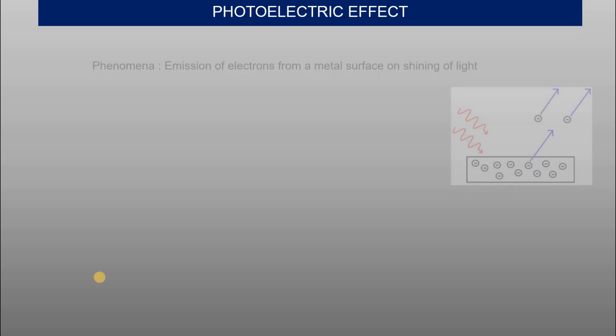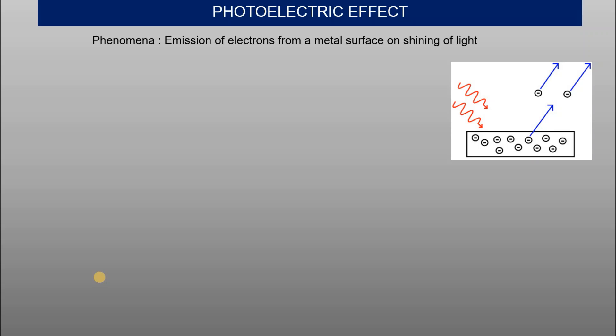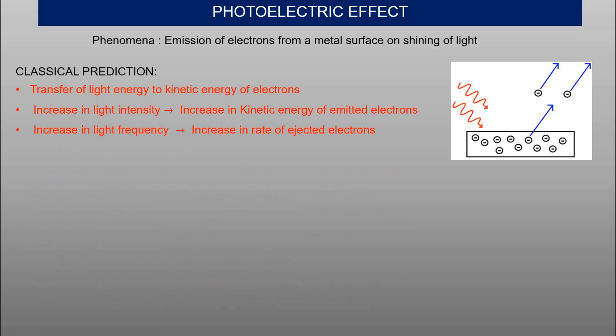Focusing on the photoelectric effect: Planck's hypothesis was extended by Einstein to explain it. When light hits a metal surface, electrons are emitted with kinetic energy. Einstein proposed the quantization of light energy, and this work earned him the Nobel Prize — not relativity, but the photoelectric effect.